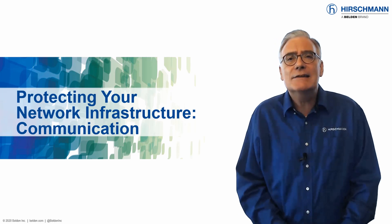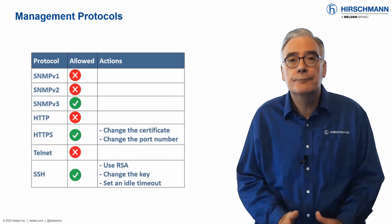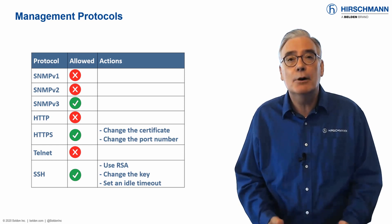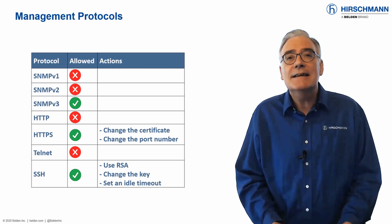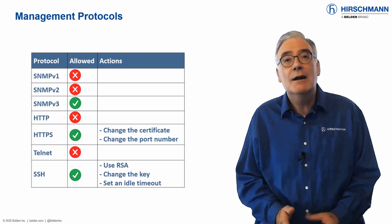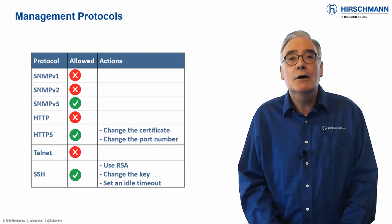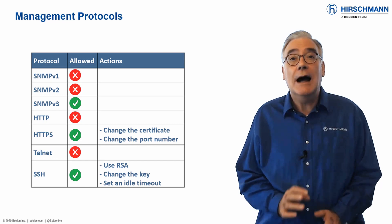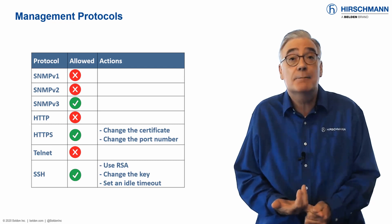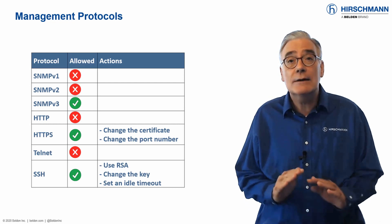Let's start by looking at ways to secure the communication to your switches and routers. In the past, Hirschmann's philosophy has been to make our products as simple as possible to use. This included maximizing the number of methods which can be used to connect to them. But today, security takes priority over ease of use. We still continue to support unsecure communication protocols such as SNMP version 1, SNMP version 2, Telnet, and HTTP. But by default they are now disabled.